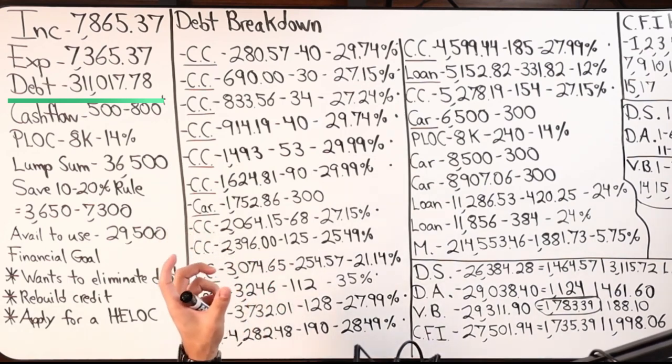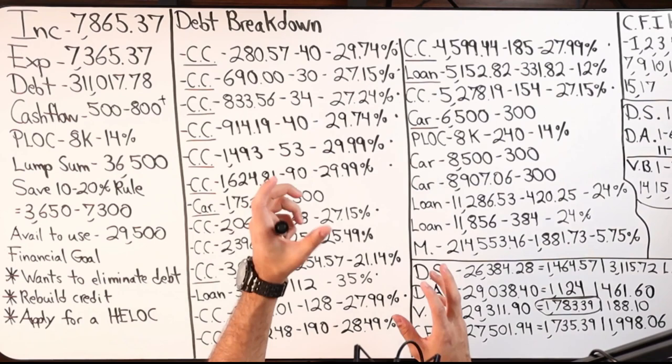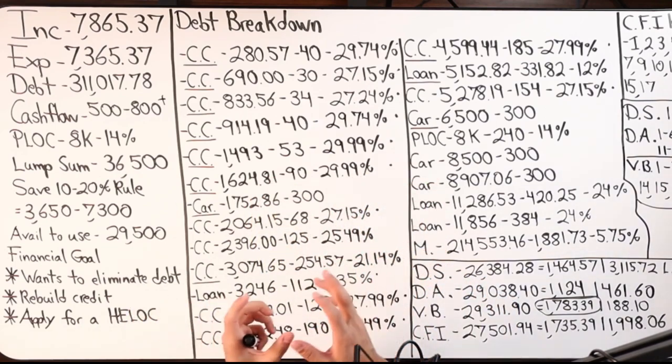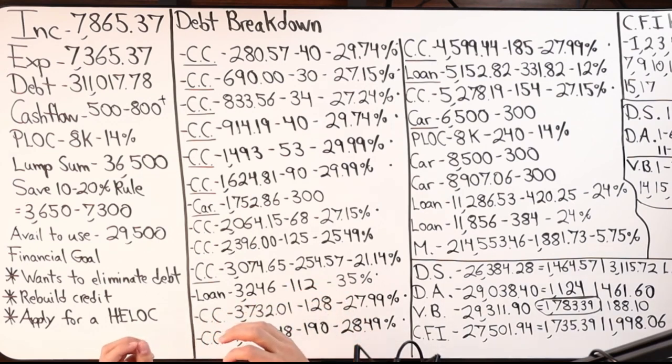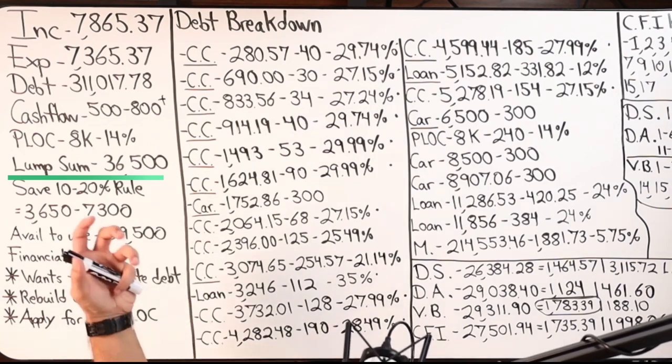The situation at hand — which is why I titled the video debt snowball versus debt avalanche versus cash flow index versus velocity banking — is we're trying to determine the most effective, efficient use of a lump sum of money coming into his economy. This is a live, real-life situation where you may have had a lump sum come in from a retirement account, life insurance, an inheritance, money from a trust, the sale of a business, a real estate transaction — whatever it may be. A lot of you might be struggling with: what do I do with this money, how do I break it down, which debts do I apply it to? We're going to figure that out based on the most popular debt elimination strategies.